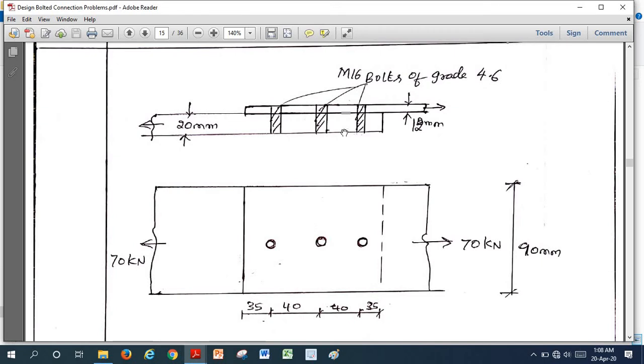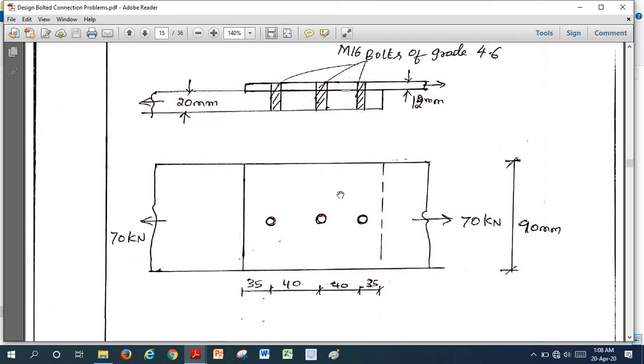Now if you go for detailing here, this is the top plate, 12 mm, bottom plate 20 mm. Here I have provided 3 bolts of M16, grade 4.6. If you draw another view here, this is the force direction, 70 kN factored load. This is the pitch distance I have provided, 40 mm. The end distance is 35 mm.